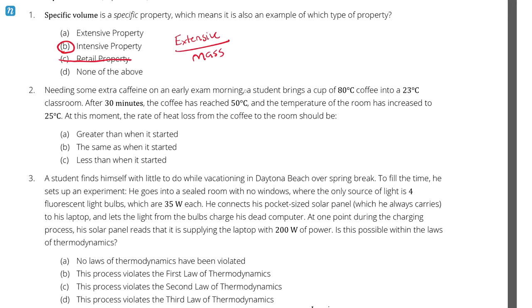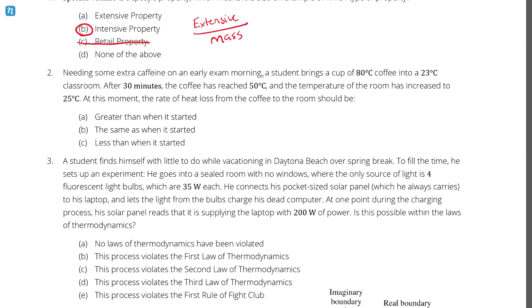Question number two. Needing some extra caffeine on an early exam morning, a student brings in a cup of 80 degrees celsius coffee into a 23 degrees celsius classroom. After 30 minutes, the coffee has reached 50 degrees celsius and the temperature of the room has increased to 25 degrees celsius. At this moment, the rate of heat loss from the coffee to the room should be greater than when it started 30 minutes ago, the same as when it started, or less than when it started. So let's consider what's actually happening here. Let's call the beginning of the process state one, and the end of the process state two.